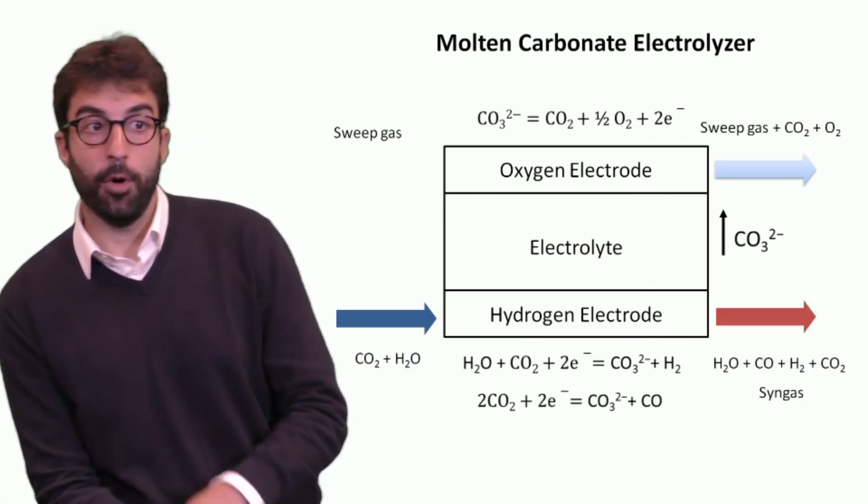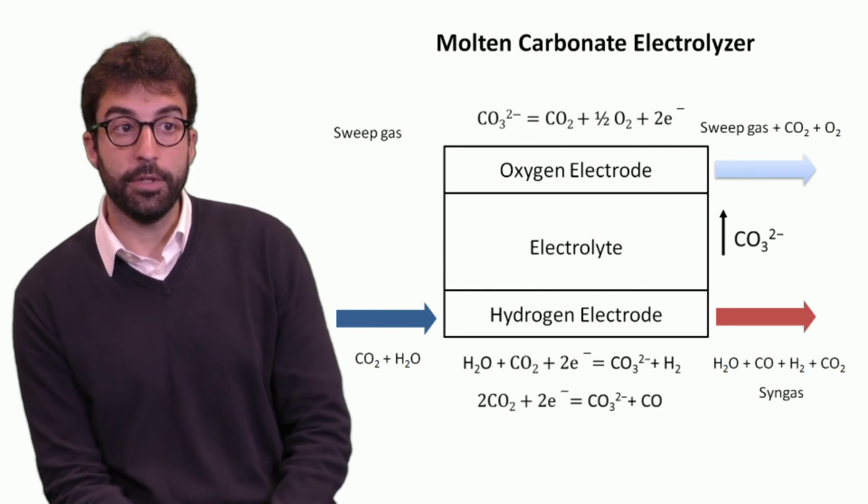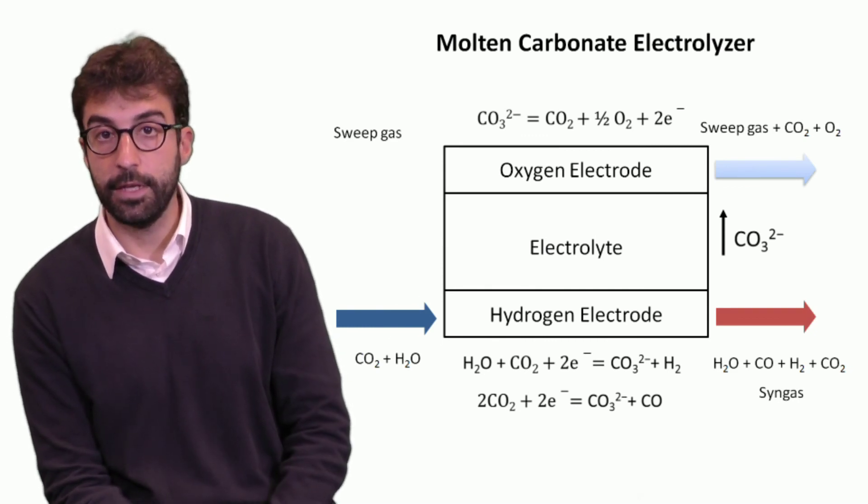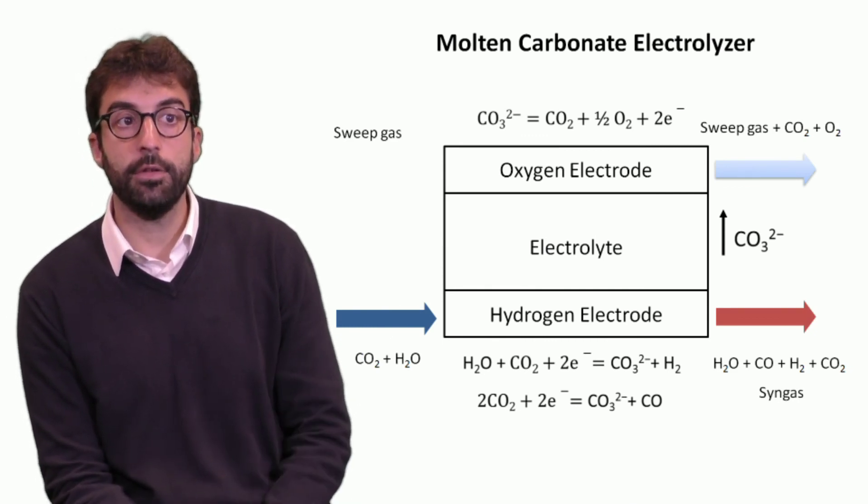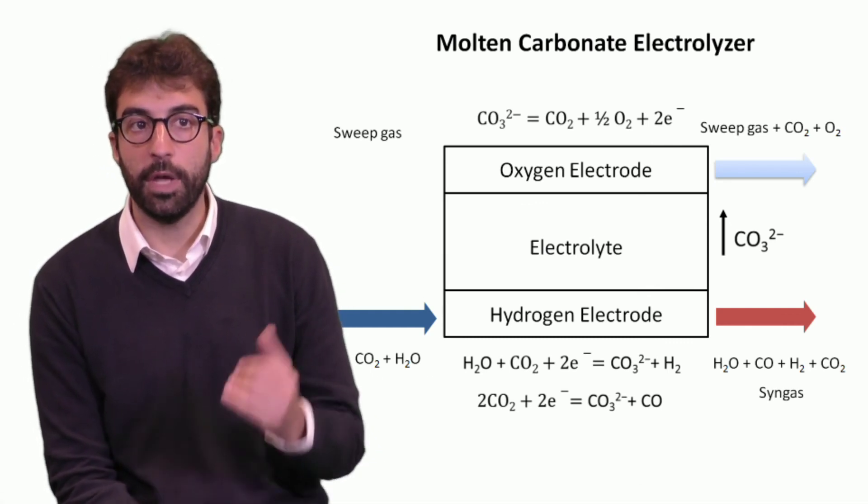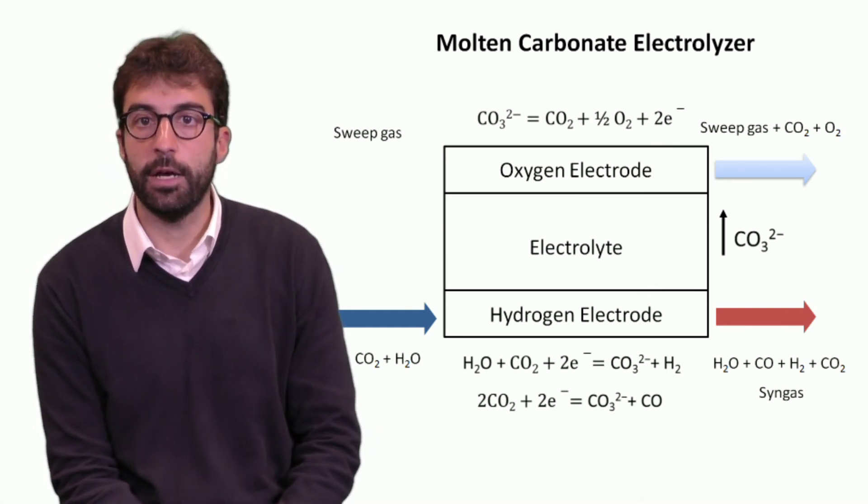In this case we have CO2 and steam on one side, and at the hydrogen electrode we need to flow sweep gas. What we have at the outlet is sweep gas with carbon dioxide and oxygen. Thank you very much.